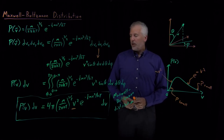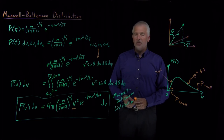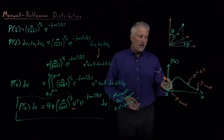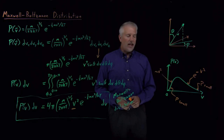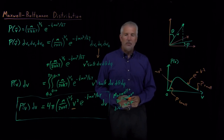We can now use this distribution to calculate things like the average speed for molecules in a gas at a particular temperature. That's the sort of problem we'll tackle next.